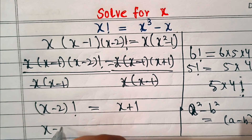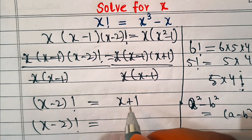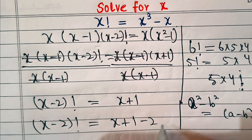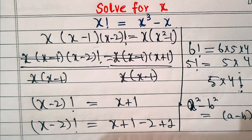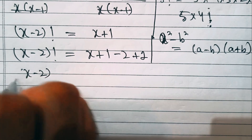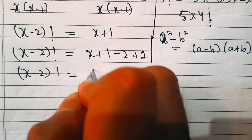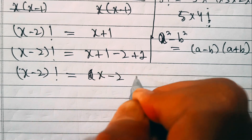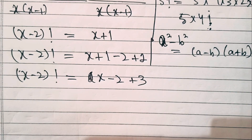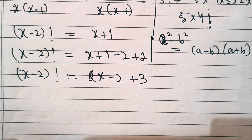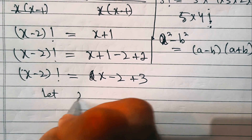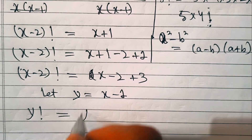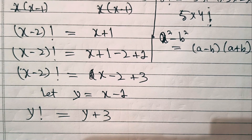So (x minus two) factorial equals x plus one. Let's add and subtract two: that is (x minus two) factorial equals (x minus two) plus three. Now we substitute x minus two equal to y, so this becomes y factorial equal to y plus three.